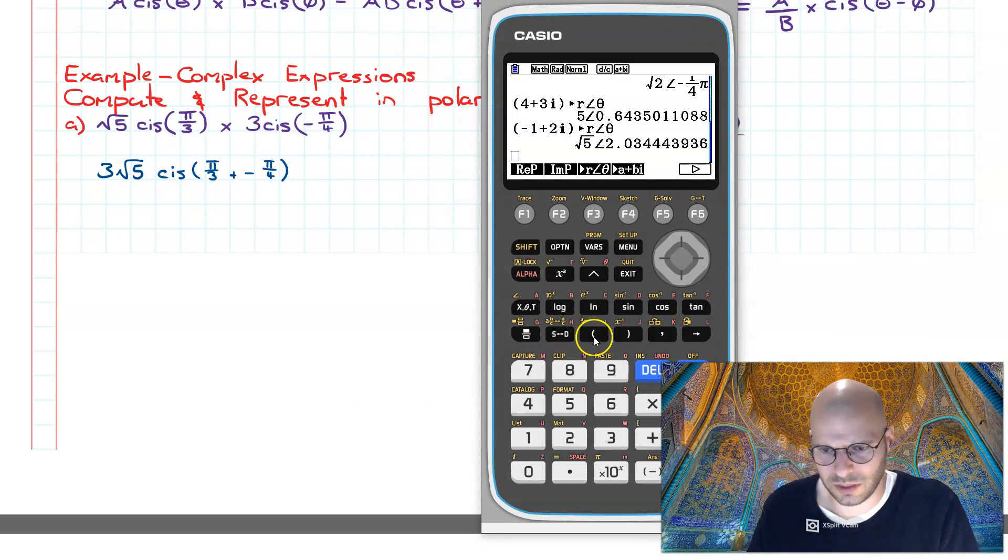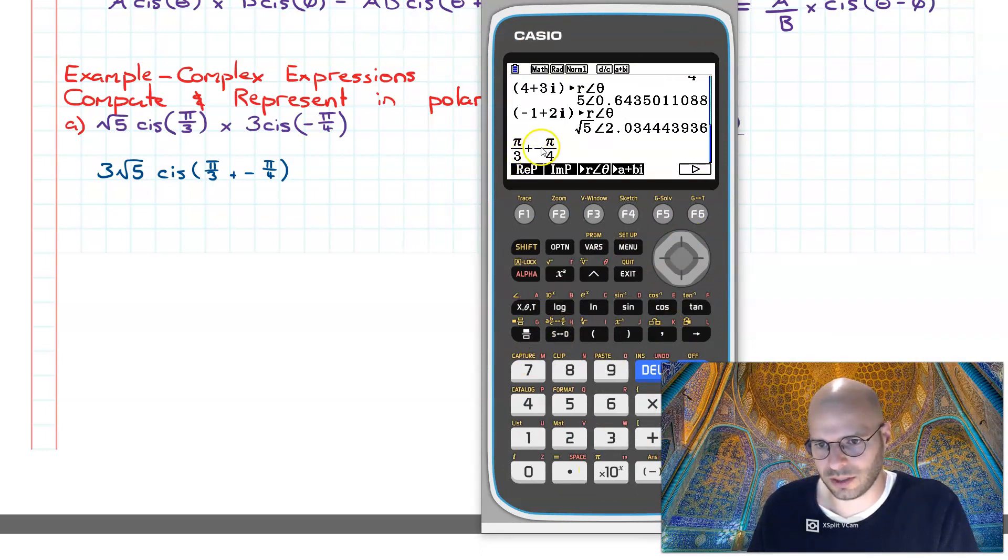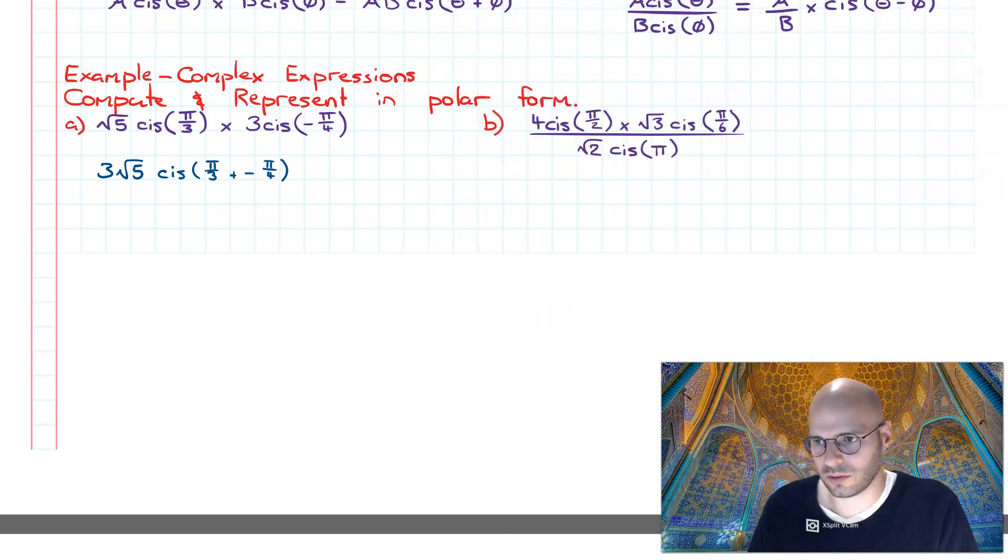Now doing this calculation, I can simply go pi over three plus negative pi over four gives me a value of pi over twelve. So therefore the simplified version is going to be three root five cis pi over twelve. So nice and simple.